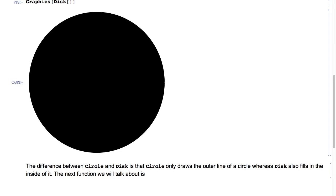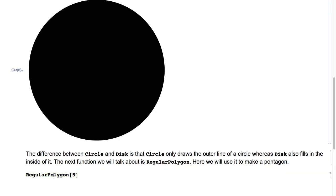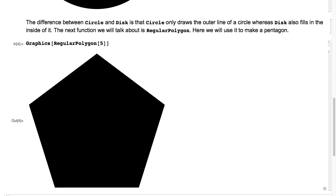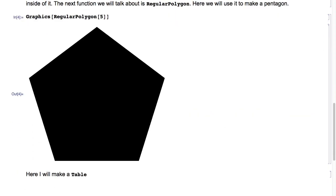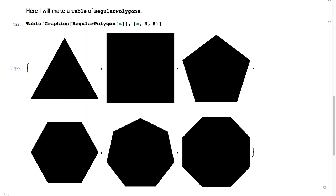The next function we will talk about is RegularPolygon. Here we will use it to make a pentagon. So I'll type RegularPolygon of five, then I'll wrap it all in Graphics, hit Shift+Enter, and as you can see, we get a pentagon. Here I will make a table of regular polygons — I'll type RegularPolygon of n, wrap it in Graphics, wrap it in Table, with n from 3 to 8, hit Shift+Enter, and I get everything from a triangle to an octagon.